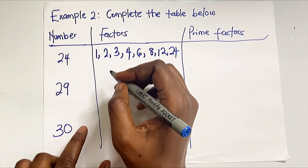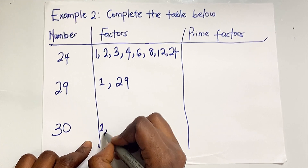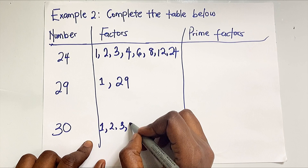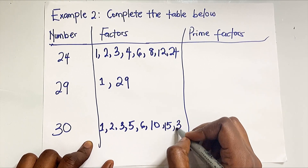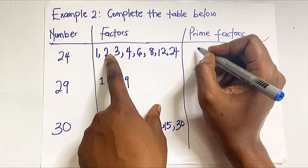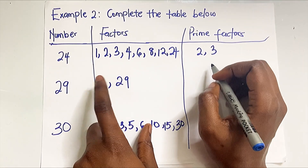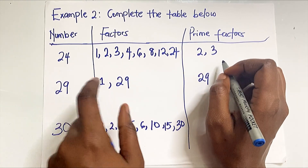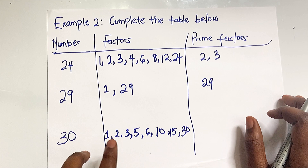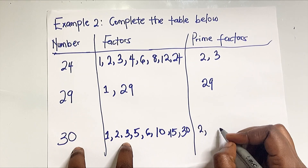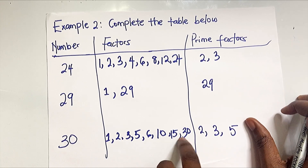Now let's write out the factors of 29. 29 looks like a prime number — and it is — so only 1 and 29 itself are its factors. For 30, we have 1, 2, 3, 5, 6, 10, 15, and 30. Now for the prime factors: 2 and 3 are prime factors of 24. Since 29 is itself a prime number, 29 is its own prime factor. Among the factors of 30, 2, 3, and 5 are prime numbers, so those are the prime factors of 30.